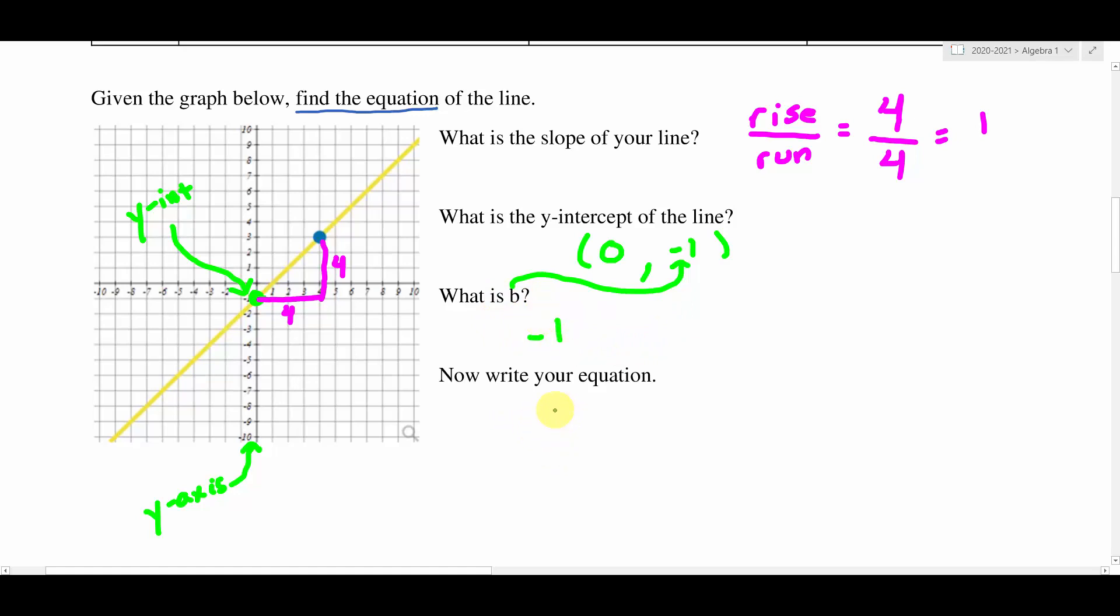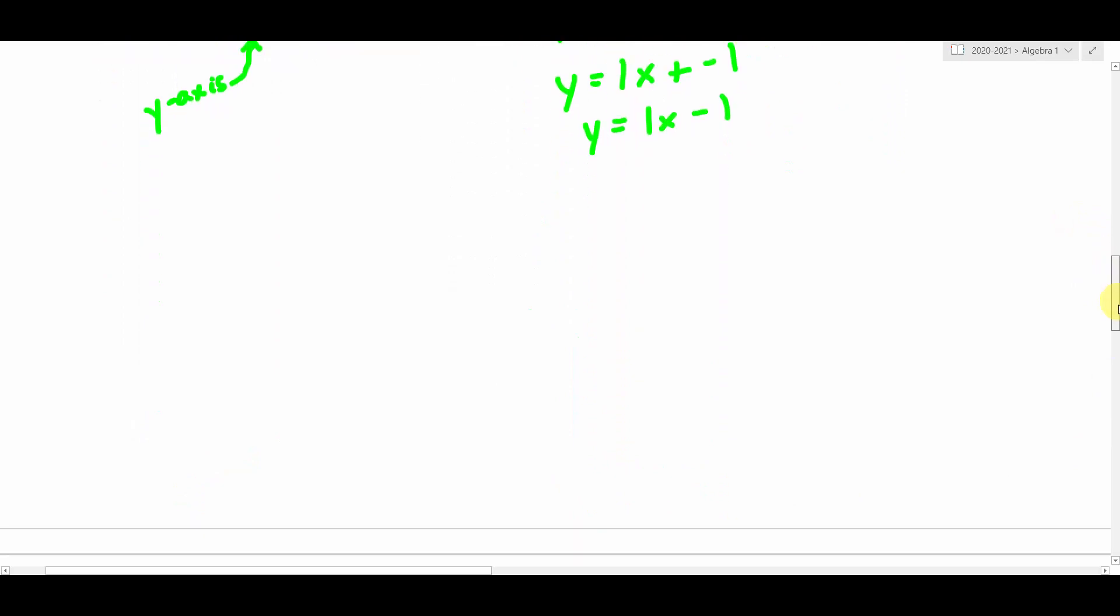So now I'm going to write my equation. Remember, the equations of lines take the form y equals mx plus b. And I need to fill in the m and the b-values, which we just found. We just found m, which is our slope, and we just found b, which is our y-intercept. So y equals our slope we found to be 1. So I'll put a 1x plus, and then my b-value is negative 1. So I'll say plus negative 1. Now I can simplify that a little bit, so I can say y equals 1x minus 1. Because adding a negative is the same thing as subtracting, and that would finish the equation of my line. This is the equation that I'm looking for.